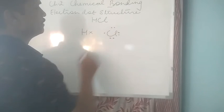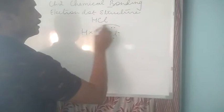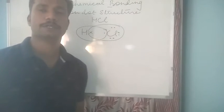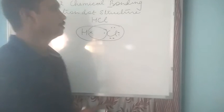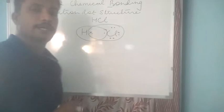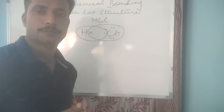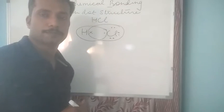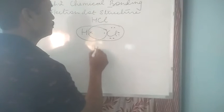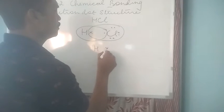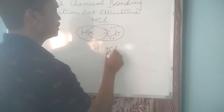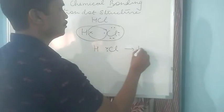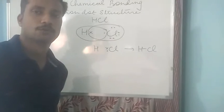So it will gain 1 electron. At the same time hydrogen also needs 1 electron to complete its duplet. But you can see since chlorine is more electronegative in character than hydrogen, this shared pair of electrons should be shown more towards the chlorine atom. So this is how we can show now. This is more towards the chlorine atom. And it is this that forms the covalent bond between hydrogen and chlorine.